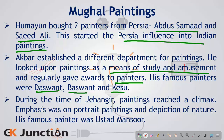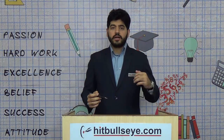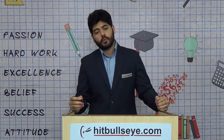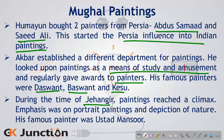During Jahangir's reign, the art of painting reached a very high point. There was emphasis on portrait paintings, and Jahangir was very fond of nature, which was reflected in his paintings — nature itself being the most important theme of his era. His most famous painter was Ustad Mansur.